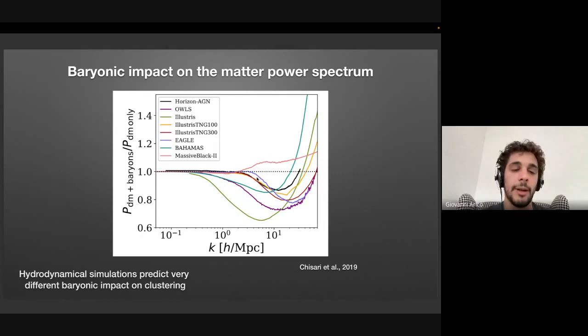We can, for instance, quantify them by running a pair of simulations. One hydrodynamical simulation with all this baryonic physics and astrophysical processes and a twin simulation where all the hydrodynamics is switched off, so just gravity only or dark matter only and compare them. So we run these two simulations and we measure their matter power spectrum and we take the ratio.